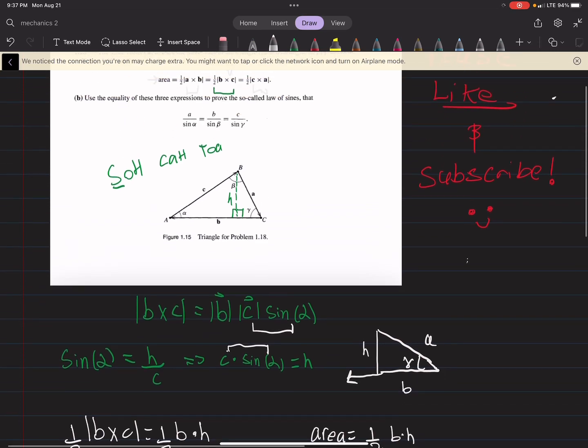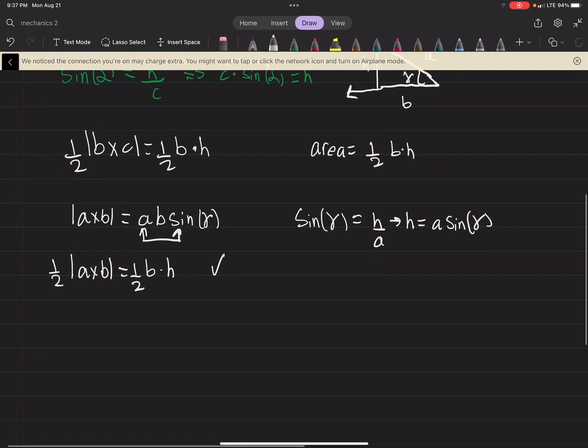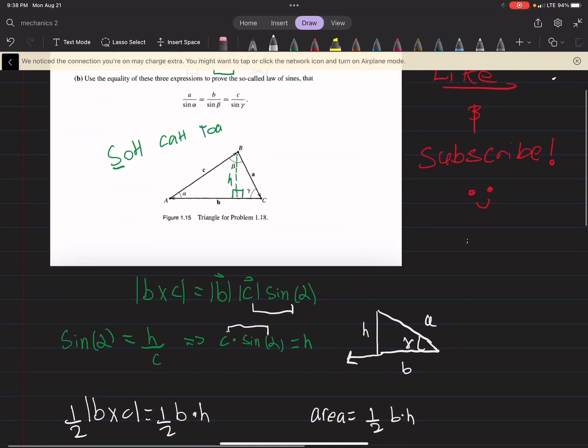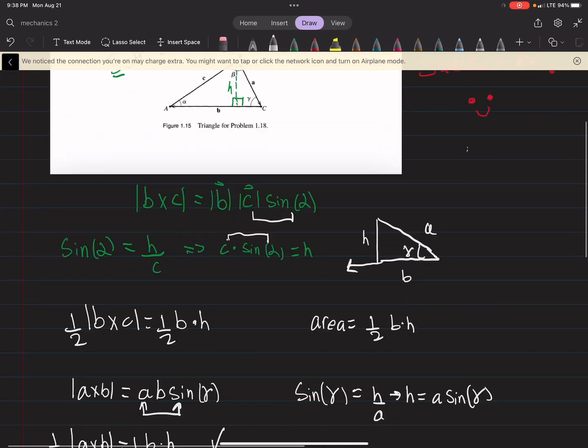And we can do pretty much the same thing with C cross A. Might be helpful to think of this. So C cross A is just going to be A, C, sine beta. And if we think of the triangle, if we were to kind of tilt it here, where this is vector B, this is vector C, this is vector A, sorry. And we again drop a perpendicular here. So this, you could imagine if you were to rotate this triangle in such a way that A is now your base, that's essentially what I've drawn over here.